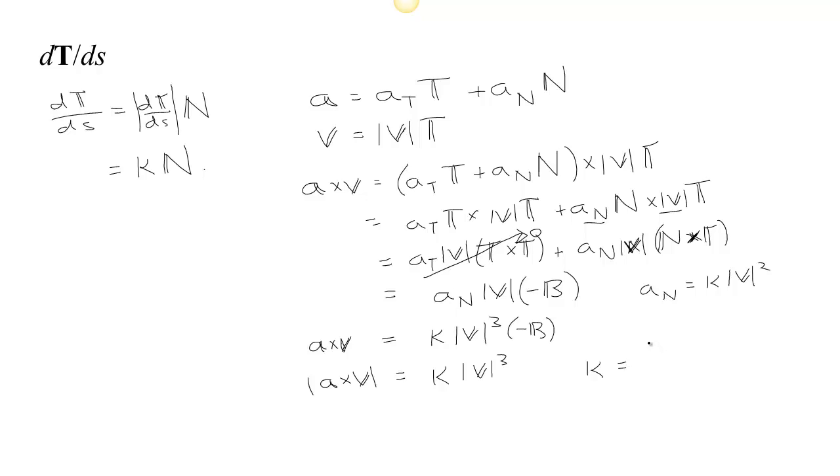So we get this formula that's kind of handy for calculating kappa. It's the length of a cross v or v cross a, either way, divided by the speed cubed.